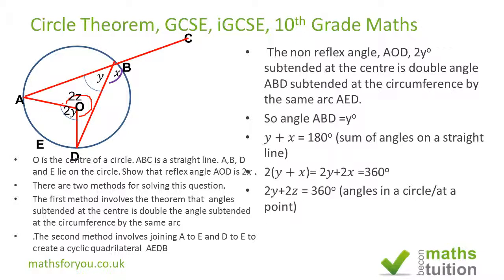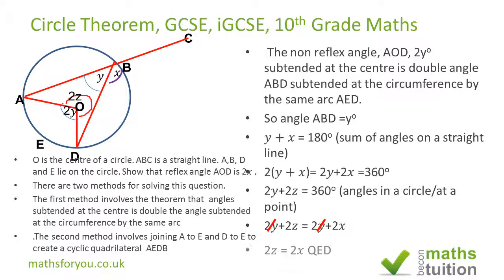We know that the angles at a point — the angles in the circle — equal 360 degrees, which means that 2Z + 2Y = 360 degrees. Which then means that 2Y + 2Z equals 2Y + 2X, because they're both equal to 360 degrees. If we subtract 2Y from both sides, the 2Ys cancel out, and we end up with 2Z = 2X. And that's what we needed to prove.